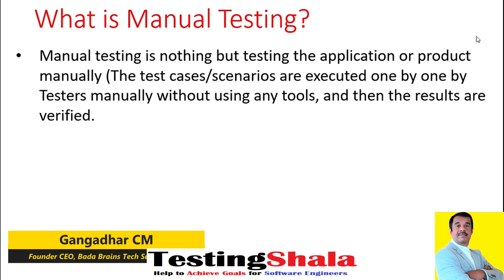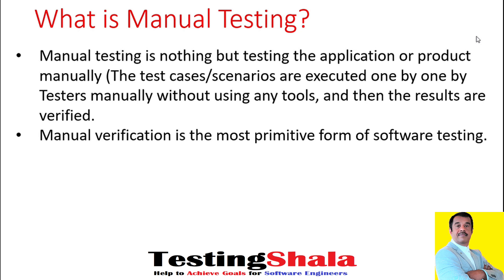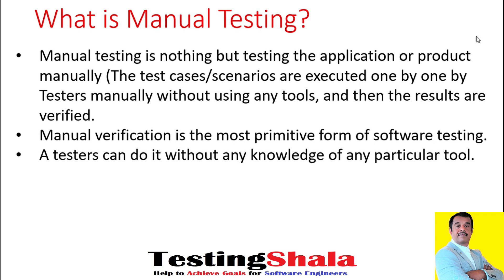Manual testing involves comparing the expected results with the actual results. If both expected and actual results are the same, the manual tester will mark the test case as passed. Otherwise, the test case is marked as failed and you log the defect or bug. Manual verification is a more primitive form of software testing and is the first step in any software testing.